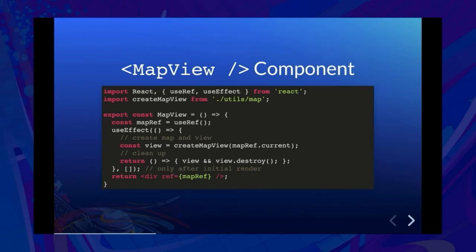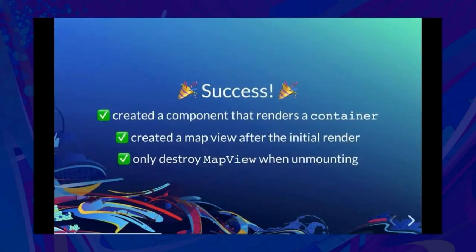There's one other thing we've added: our effect returns a function. This is how you tell React what needs to be cleaned up. Usually in a side effect you're creating something — in this case, a map view — and it's best practice to destroy the things you create so you don't have any memory leaks. So we return a function that calls destroy on the view.